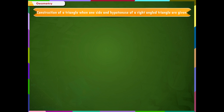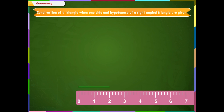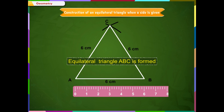Construction of a triangle when one side and the hypotenuse of a right-angled triangle are given. Construct a right triangle PQR in which angle Q is equal to 90 degrees, PR is equal to 6 cm, and QR is equal to 4 cm. Step 1: Draw QR equal to 4 cm. Step 2: Name the intersecting point of the two arcs as C. Join AC and BC. Thus, an equilateral triangle ABC is formed.